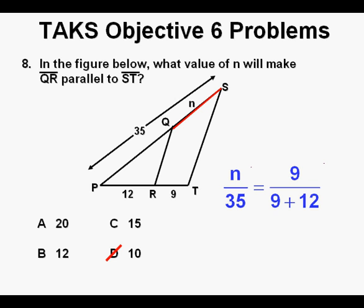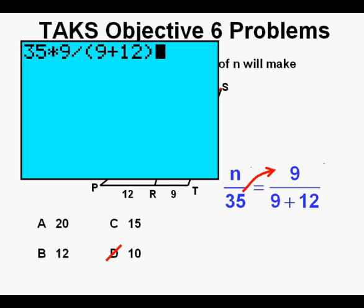To choose between answers B and C, we can set up a proportion. We have N over 35 is equal to 9 over 9 plus 12. To solve for N, we cross multiply the 35, and that gives us 35 times 9 divided by 9 plus 12, and that is 15. And it should not surprise us that it's one of our remaining answers, C. So we circle our correct answer, C.